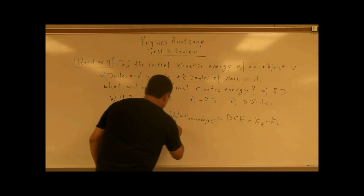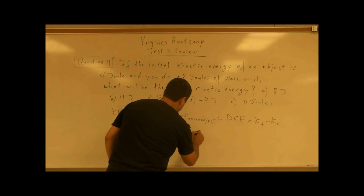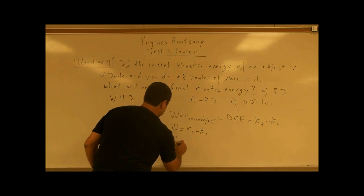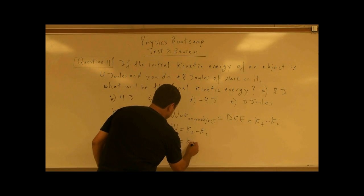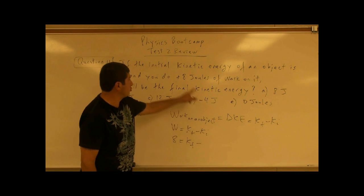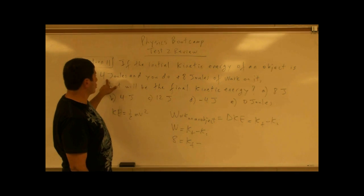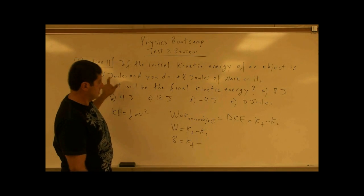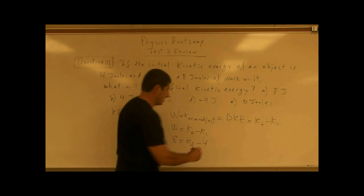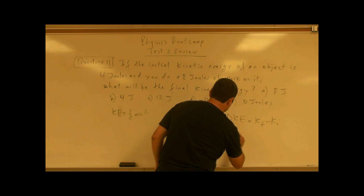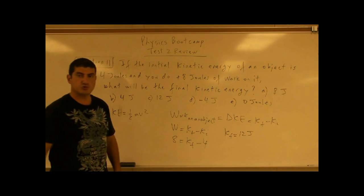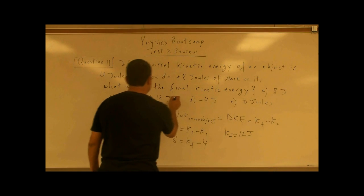So if you do work on something, you change its kinetic energy. If you do eight joules of work on it and its initial kinetic energy is four joules, the final kinetic energy is 12 joules — eight plus four equals 12 joules. So the answer is C.